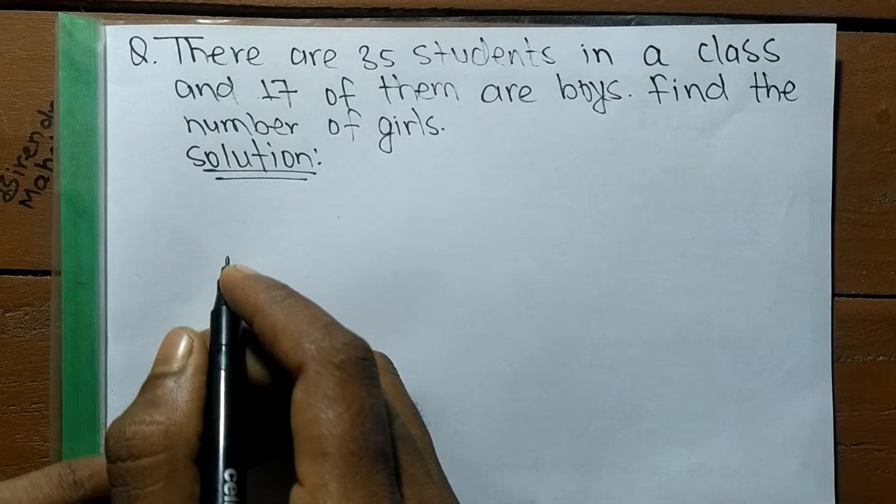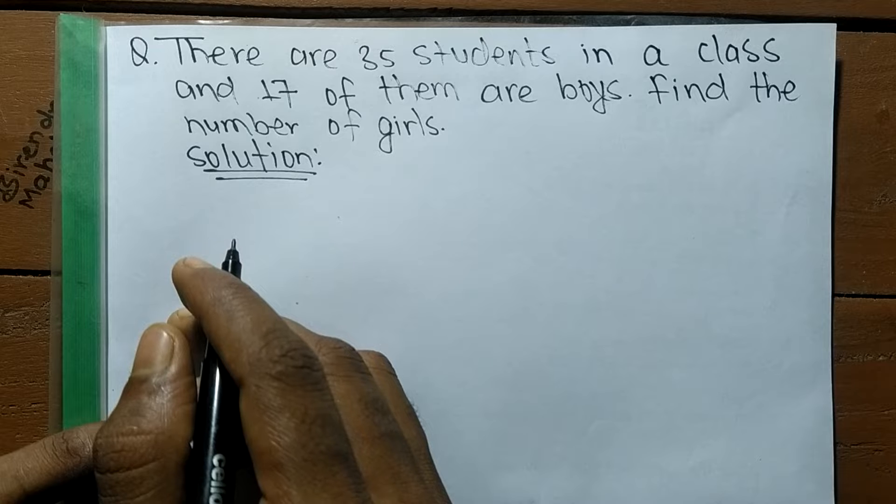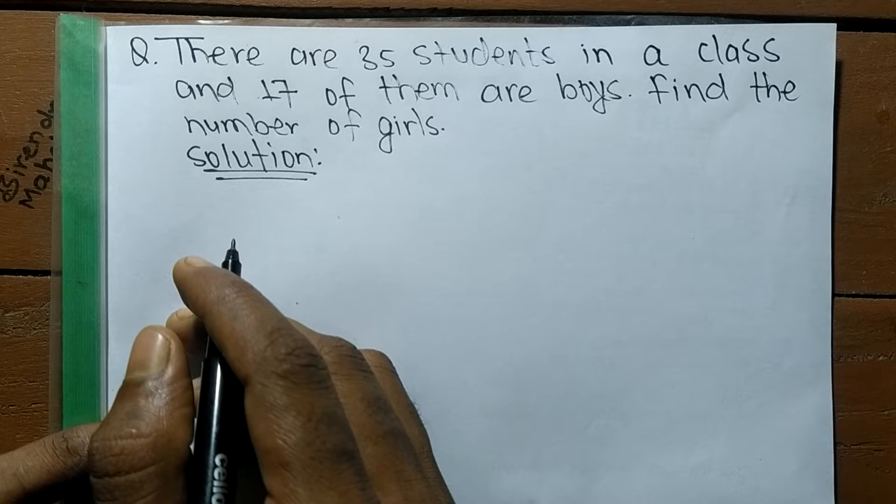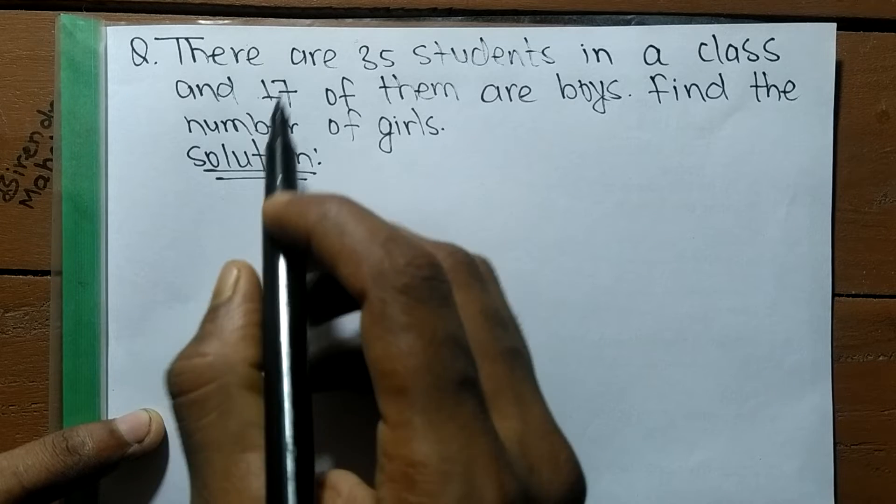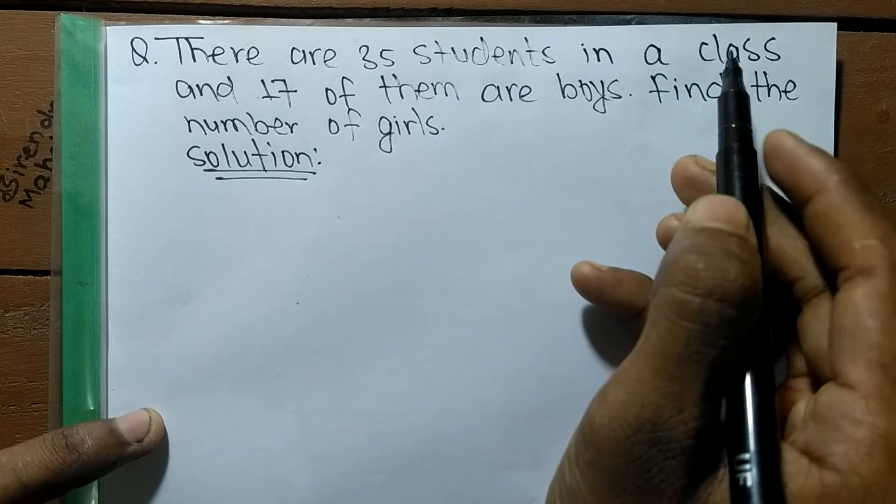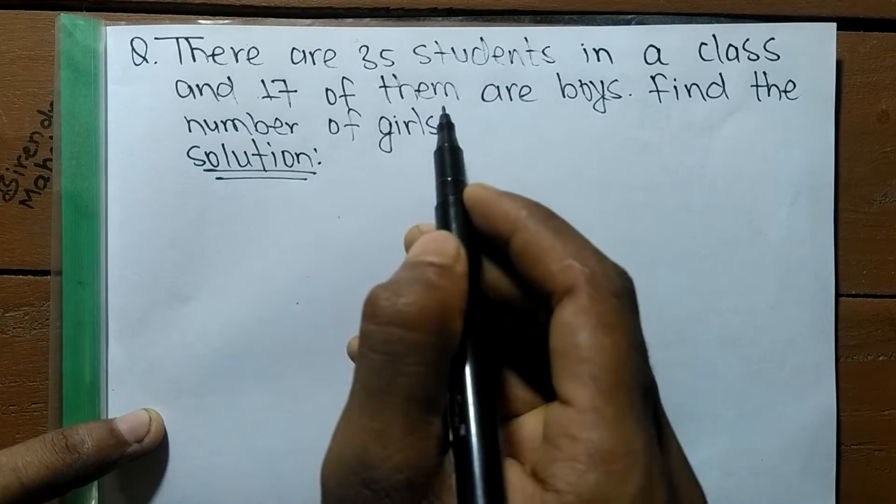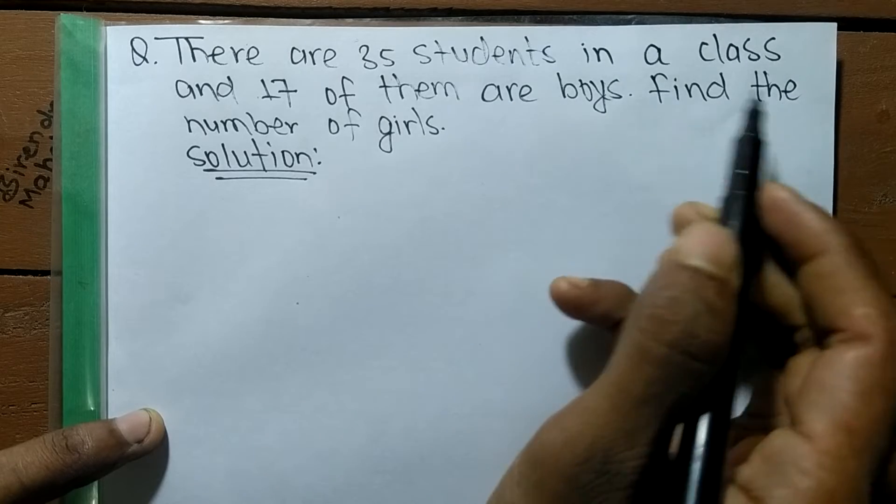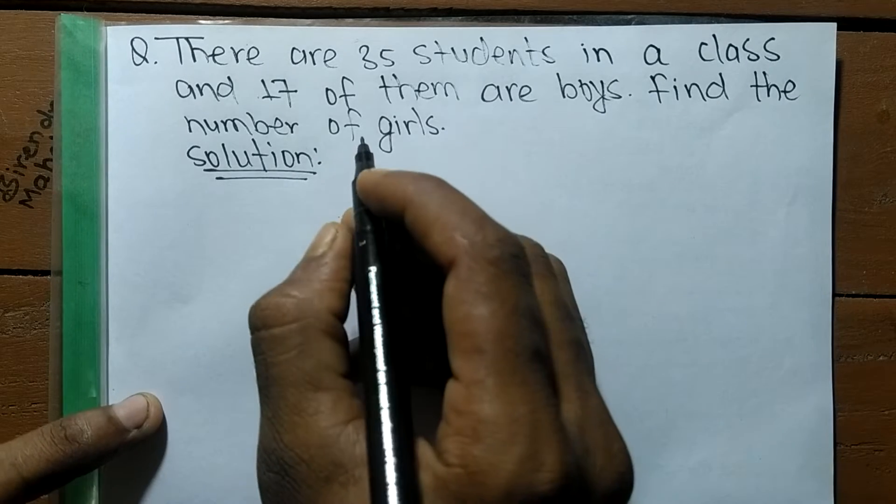So today in this video we are going to solve a problem related to word equations. The question is: there are 35 students in a class and 17 of them are boys. Find the number of girls.